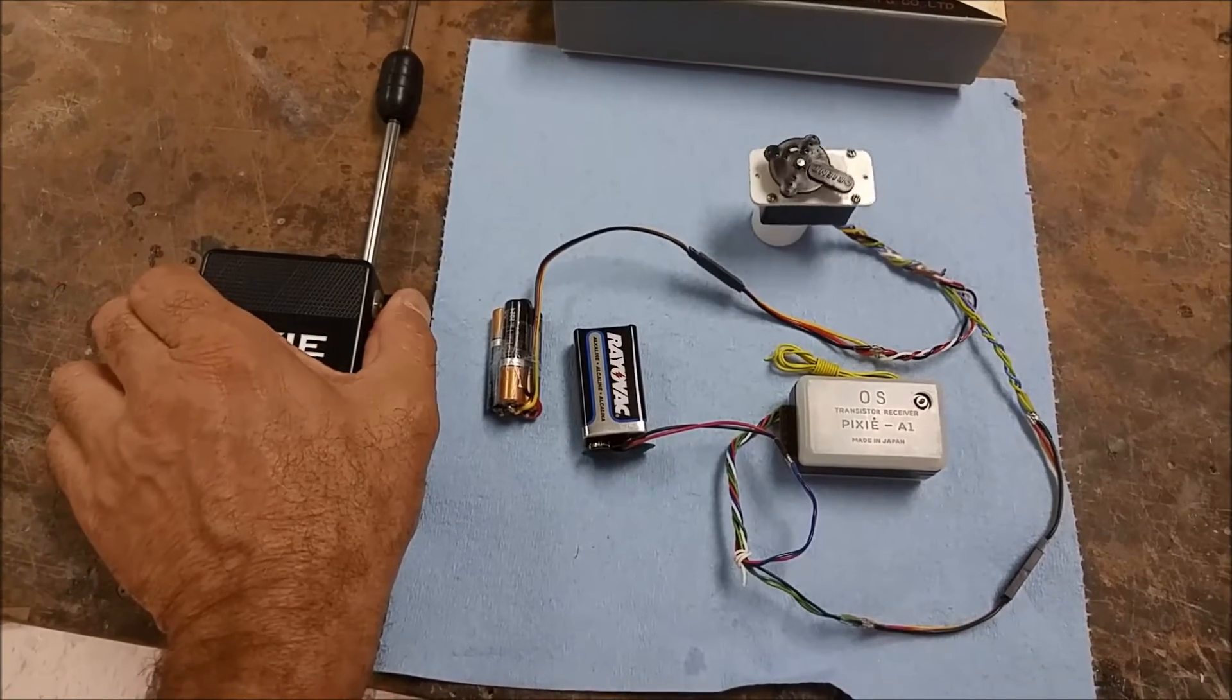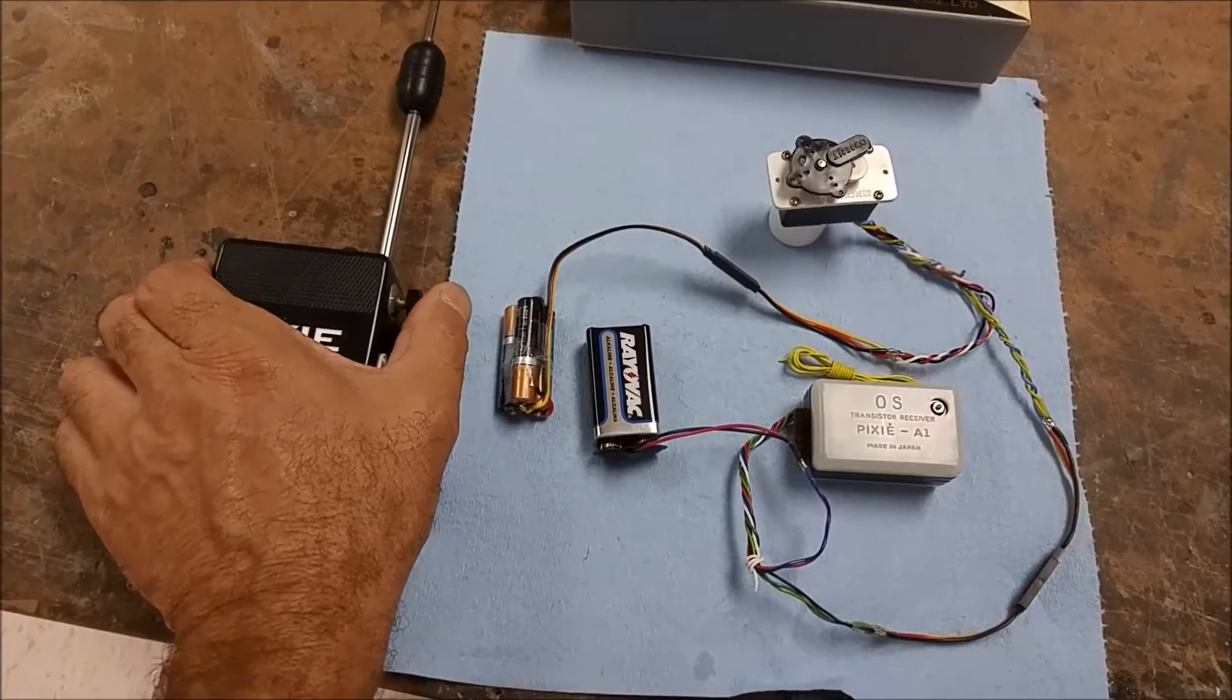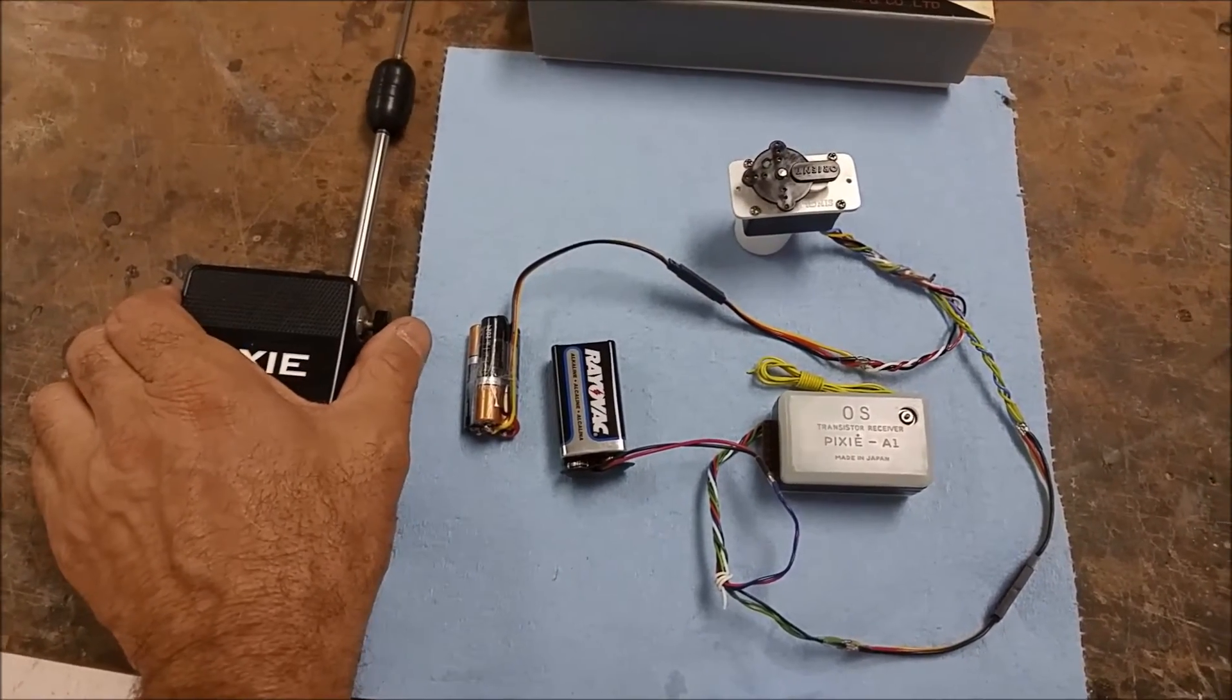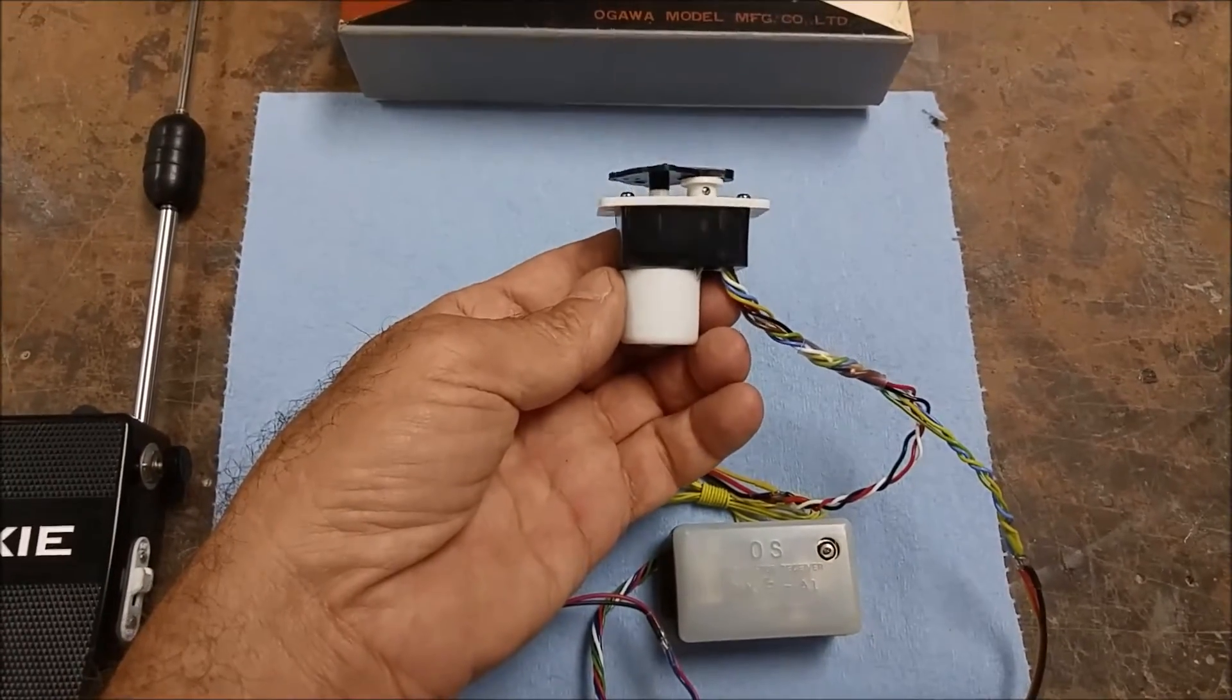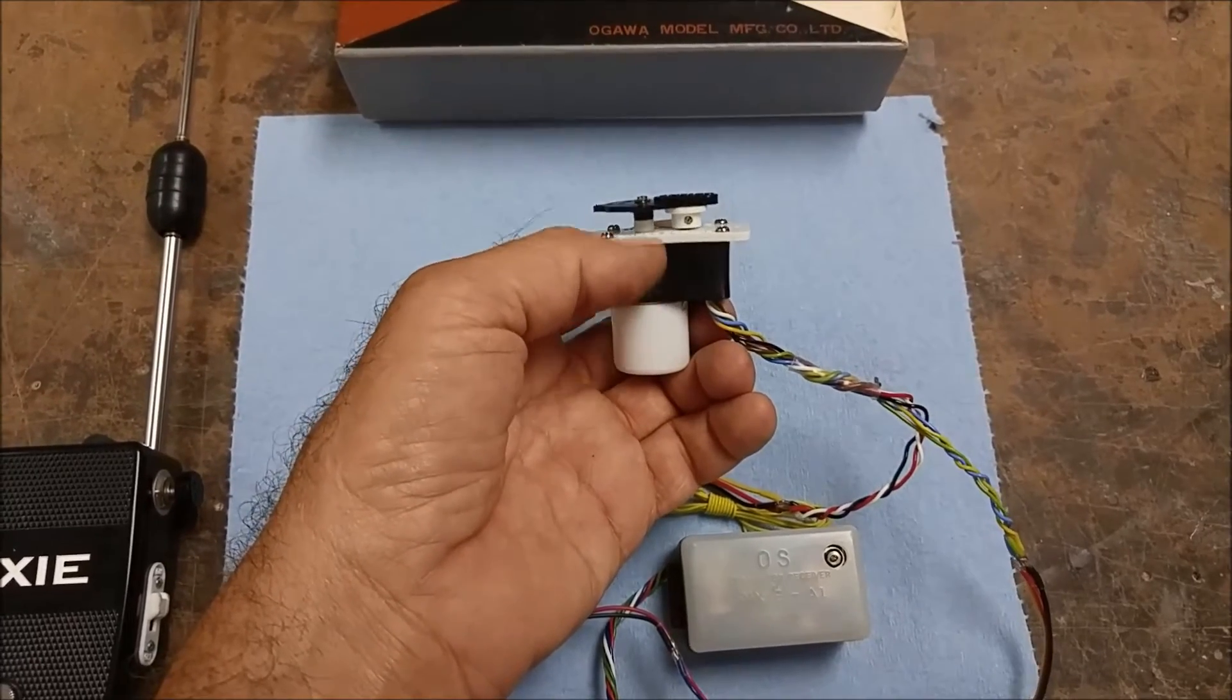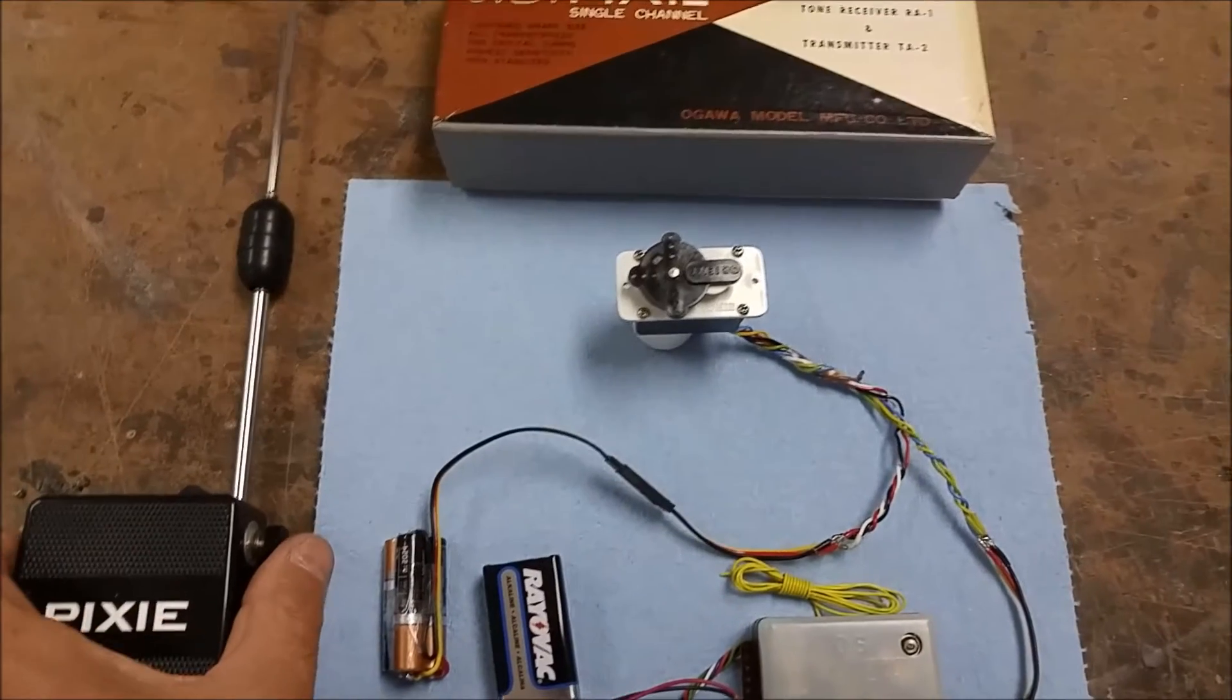So, that's right-left neutral, right-neutral, left-neutral, just like an escapement except it uses this single-channel servo motor, which has a DC motor, a gearbox, and a complicated set of contacts that allows it to sequence, just like you've seen here.